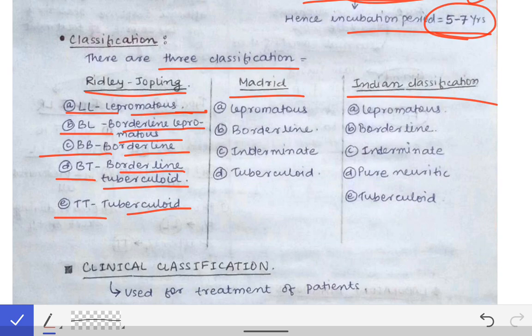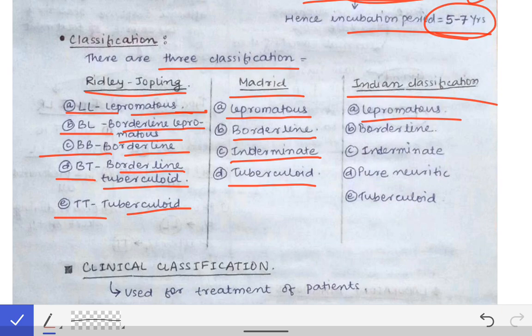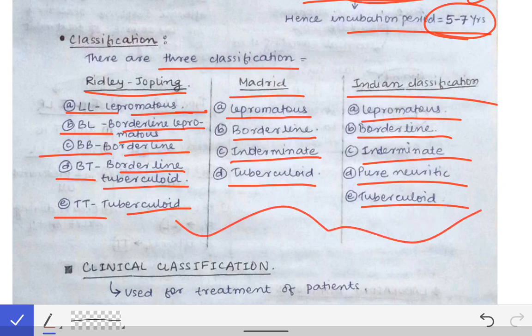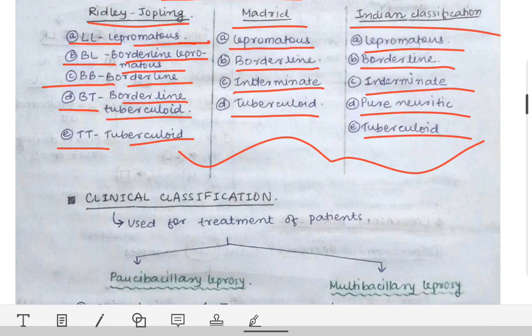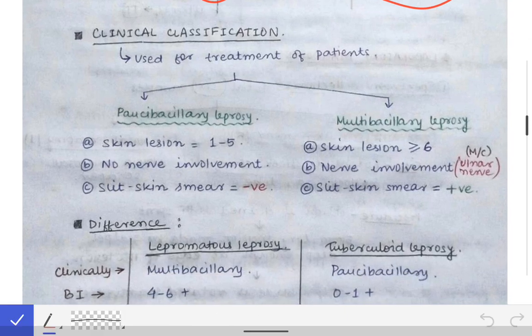In the Madrid classification, leprosy has four stages: lepromatous, borderline, indeterminate, and tuberculoid. The Indian classification includes lepromatous leprosy, borderline leprosy, indeterminate leprosy, pure neuritic leprosy, and tuberculoid leprosy. Reading all of these comparatively makes it easier to remember the classification of different stages.